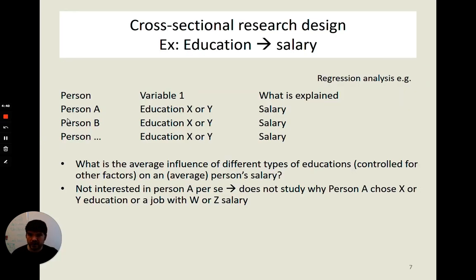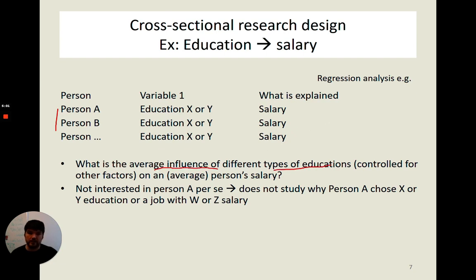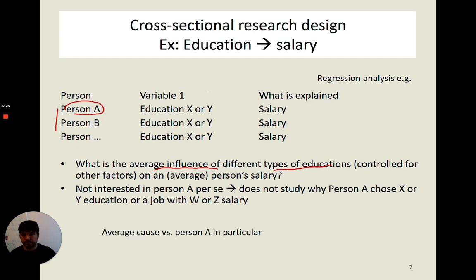To elaborate on this example: we would have some kind of spreadsheet with data on person A, person B, person C, etc. We might know their education and motivation variables, and then their salary or productivity. We can do some kind of regression analysis to find out, on average, how different types of education impact salary or productivity. We're not really interested in each individual person as such, or why a particular person chose a particular education — we're interested in the average variation that the associations between different variables lead to. So it's the average cause we're going for.